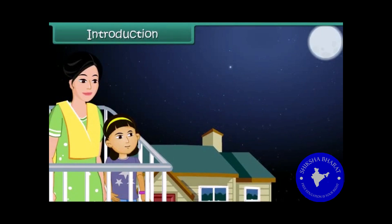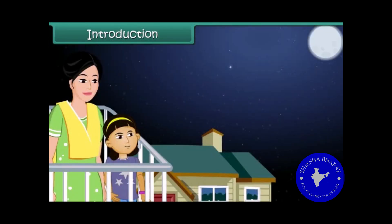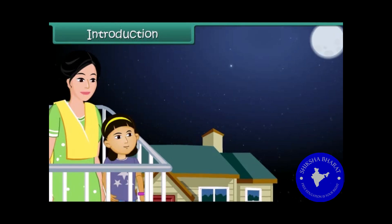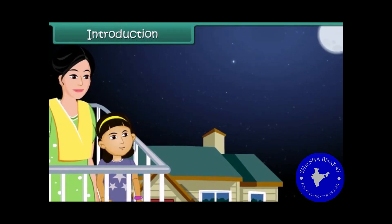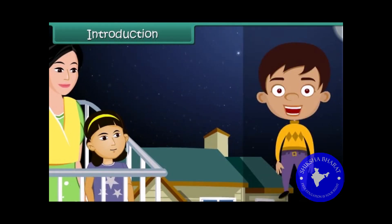Raveena likes watching the twinkling stars in the night sky. Today she notices a star that doesn't twinkle. She wonders if it is a special star and asks her mother. Her mother tells her that it is not a star but a planet. Raveena wants to know the difference between a star and a planet.